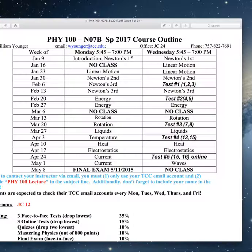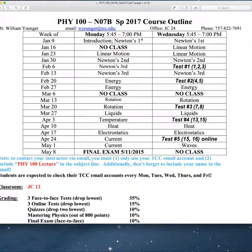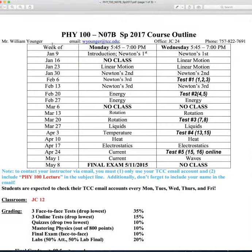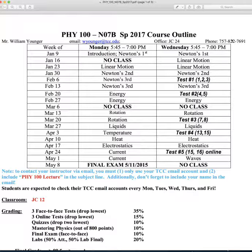Now I'm going to discuss our actual course syllabus. You see Physics 100, section 07B, Spring 2017. My name is William Younger. My email address is wyounger@tcc.edu. My office is JC24, and my phone number is 822-7691. You really should only use that if you're going to miss class or a test, because basically I never answer it — I'm always out doing stuff.